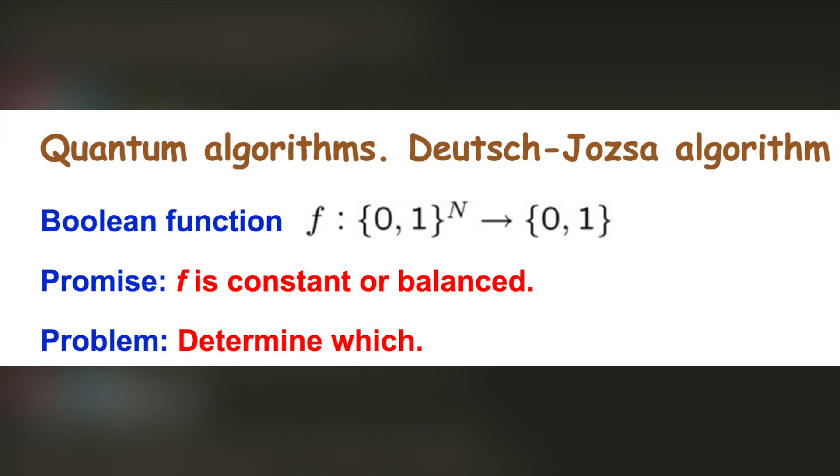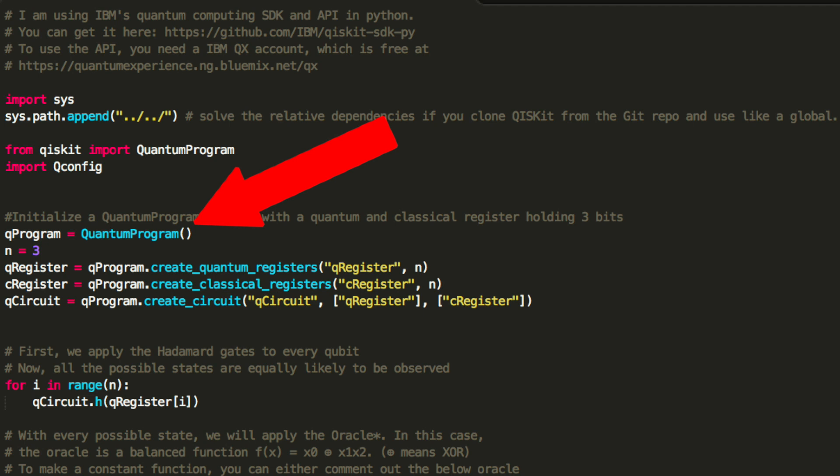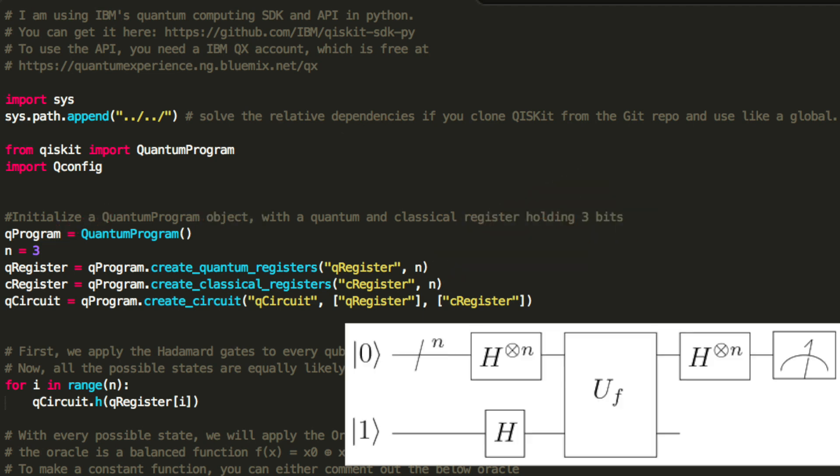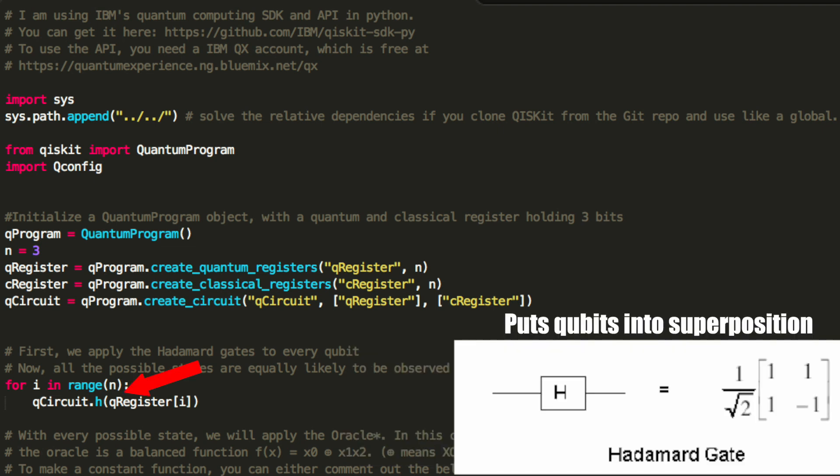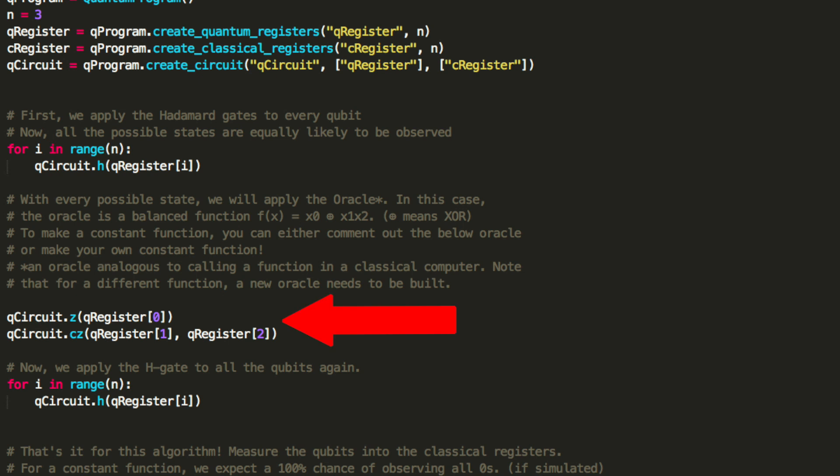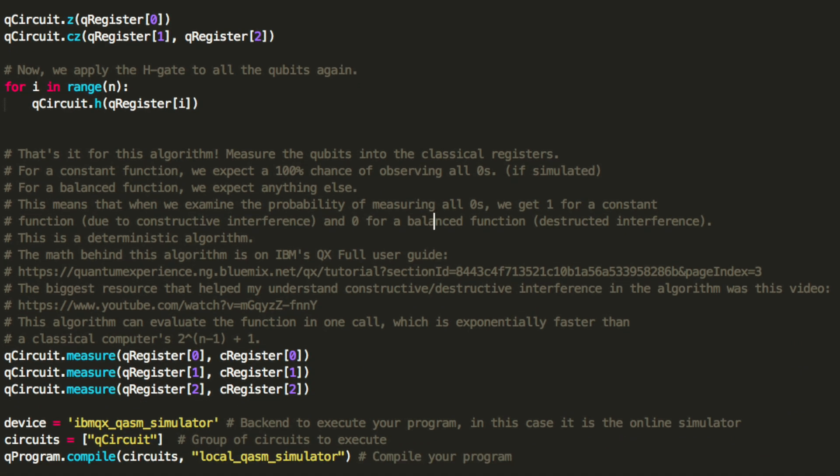First, we'll initialize a quantum program object with a quantum and classical register holding 3 bits. The program lets us manipulate quantum circuits, and each circuit has a set of data registers. We'll apply what's called a Hadamard gate to every qubit, so now all the possible states are equally likely to be observed. For every possible state, we'll apply the Oracle—in our case, the Oracle is a balanced function. Then we'll apply the H gate to all the qubits once more.